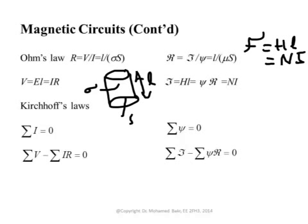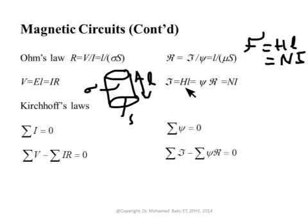So the reluctance of a piece of a magnetic circuit is equal to the average length divided by the permeability times the area — a very important expression used over and over again. We also know that V in an electric circuit equals IR, or if the field is uniform, equals E multiplied by the length. The same thing happens here: the magnetomotive force is equal to HL, and it is also equal to flux times reluctance, because flux plays the same role as current and reluctance plays the same role as resistance.